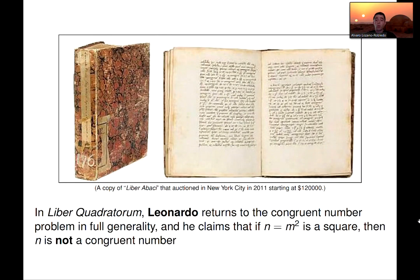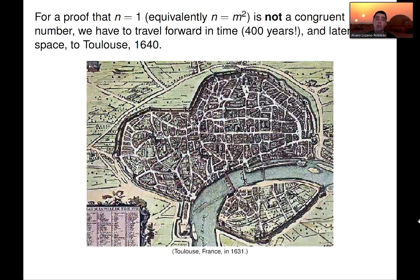Further, in Liber Quadratorum, Leonardo Fibonacci returns to the congruent number problem in full generality, and he claims that if n is a square, then n is not a congruent number. And he gives a proof that it's complicated, unclear proof that I don't think it carried forward, and to actually find a solid proof that n equals 1, or equivalent to n being a square, means that n is not a congruent number.